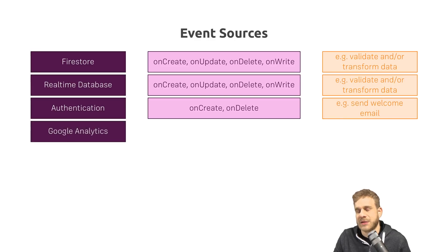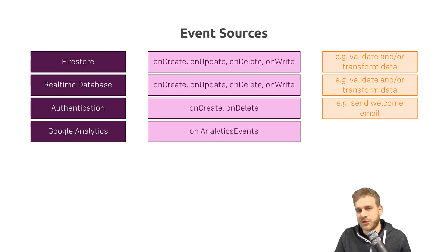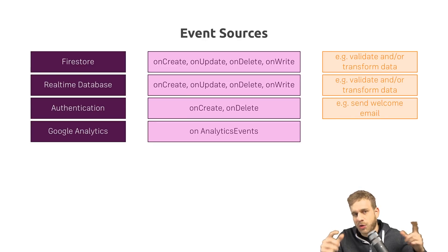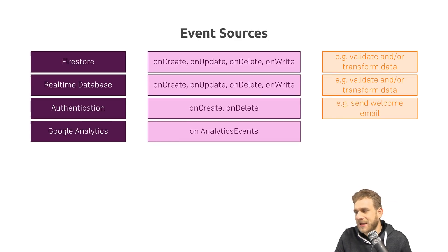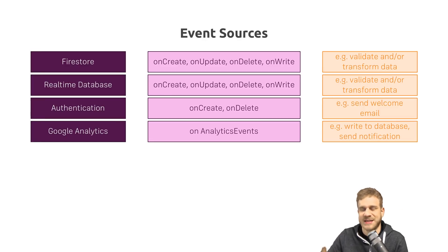We also have Google Analytics-related triggers — specifically Google Analytics for Firebase, which is an integrated product. There you have so-called analytic events which you can define yourself and trigger from client-side code. With Cloud Functions, you can listen to such an event and not just store it in the Analytics database, but also run additional code — for example, write extra information to your own database, or send yourself a notification like 'another user bought my product.'